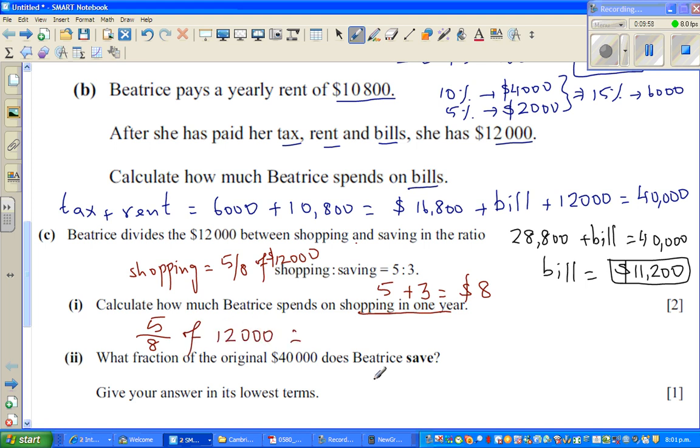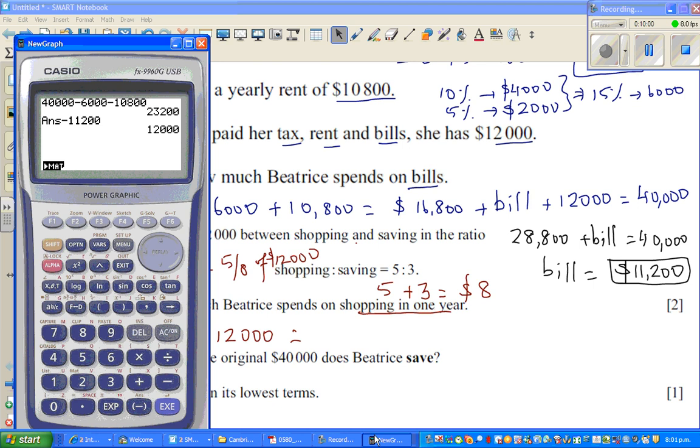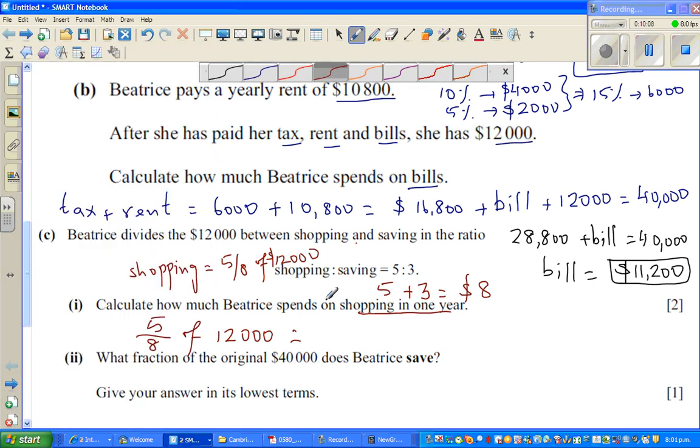So first, you can go 5 divided by 8, that is 5/8 times $12,000, which is $7,500 is what she spends on shopping.